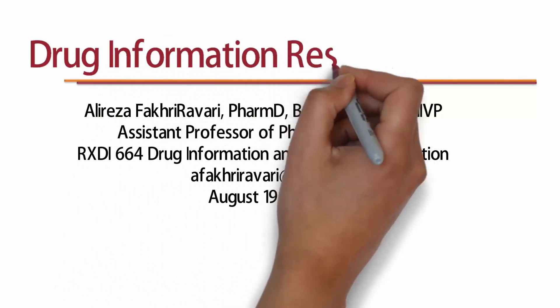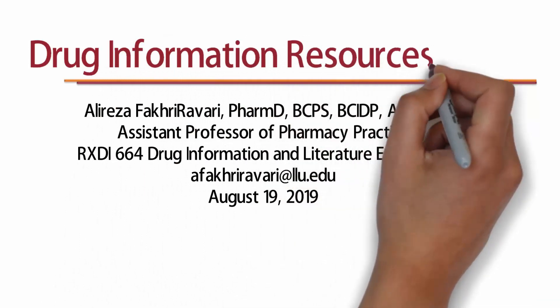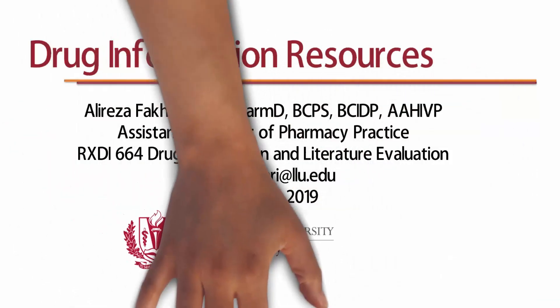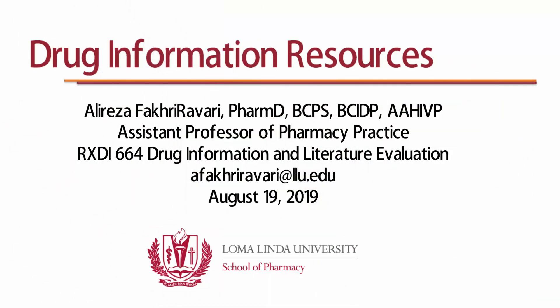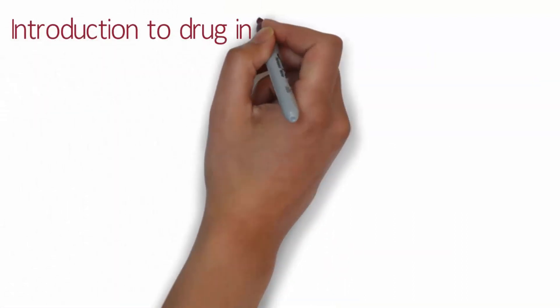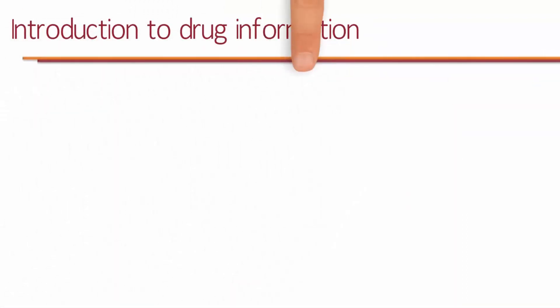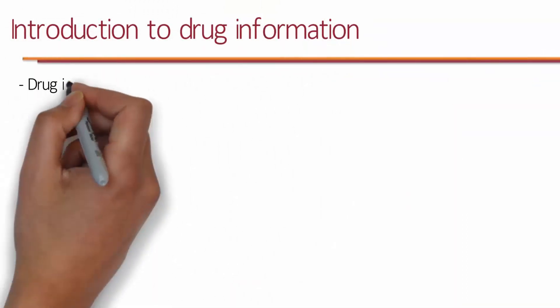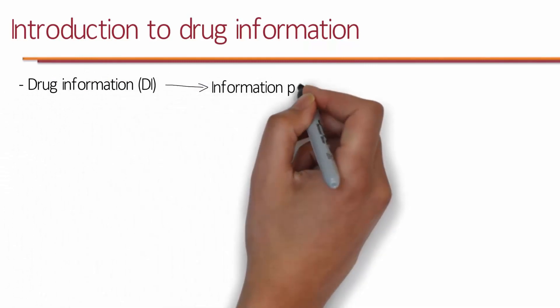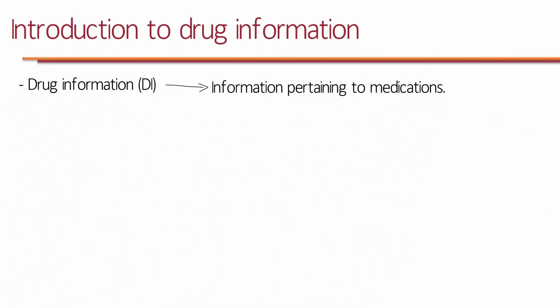I'm Dr. Fakir Raberi and this is Drug Information Resources. First, let's take a look at what drug information is. Drug information is essentially any information that pertains to medications or drugs. Drug information may be patient specific, it could be academic, or it could be population based, and pharmacists have a huge role in it.